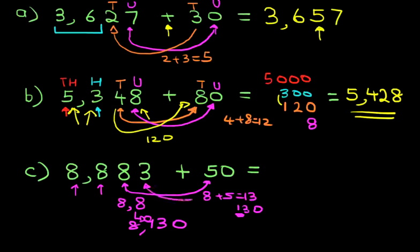The last number we need to add is the three and the zero, which is three. So the answer then becomes 8,933.